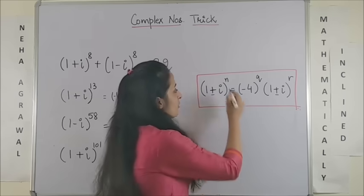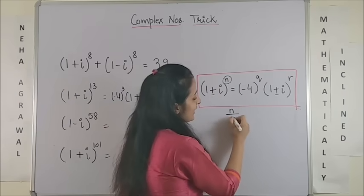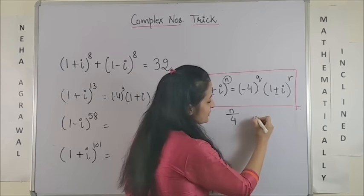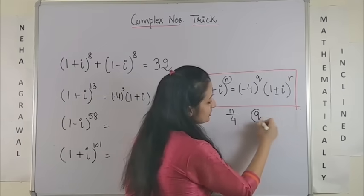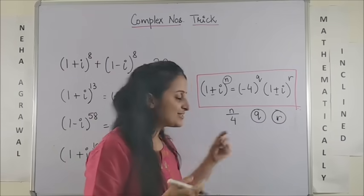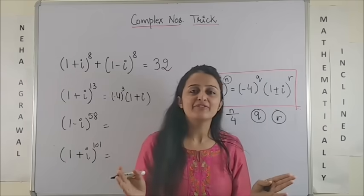What you are going to do is this n which would be given, you are going to divide it with 4. So the moment you do that you would be left with a certain quotient and a certain remainder. So that is what they are, the quotient and the remainder, and everything else gets so simple.